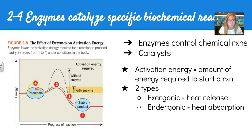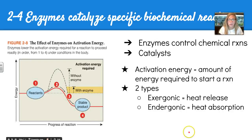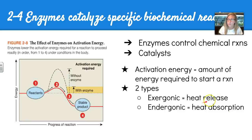You have a reactant, and without an enzyme, it takes much more activation energy to get a product. With an enzyme, that peak or time frame is shortened and you end up with a stable product. There are two types of enzymatic reactions: exergonic, in which heat is released, and endergonic, in which heat is absorbed.